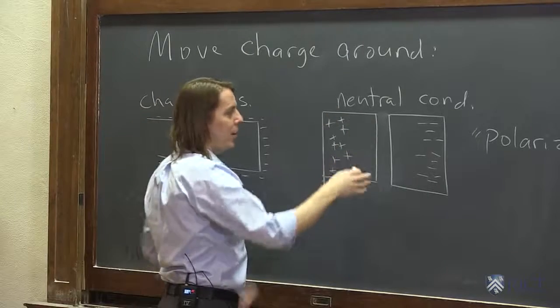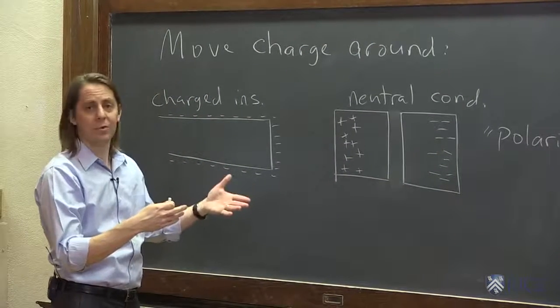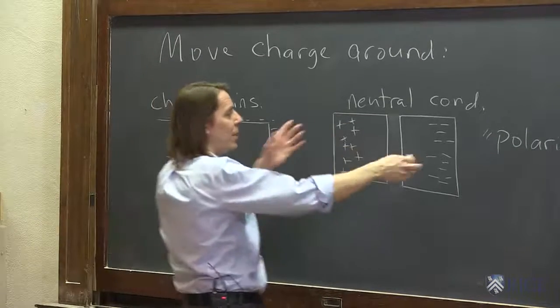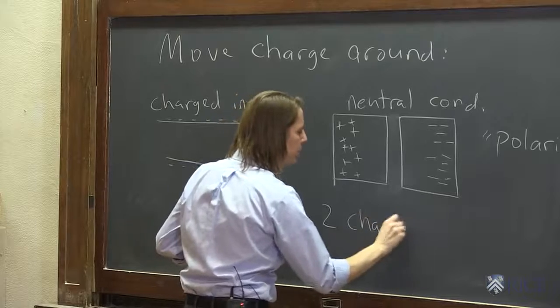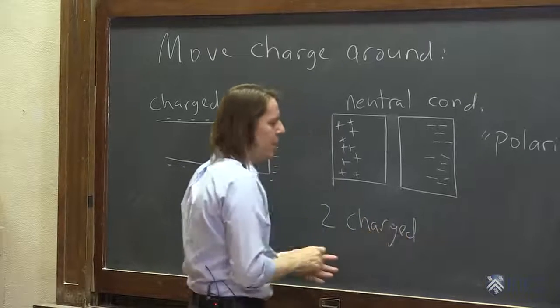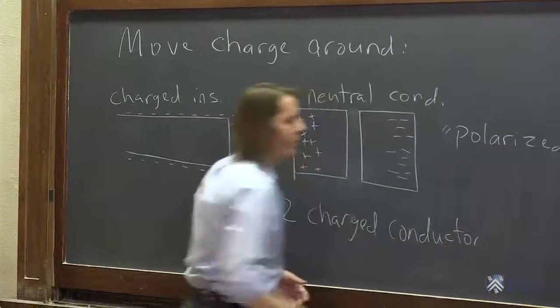That's all the same. All we did was cut it with this thing still here. And it was polarized. Now it's cut. Now we actually have two charged conductors. Even if we take this away, these will start to move around and redistribute. But now you have two charged conductors.